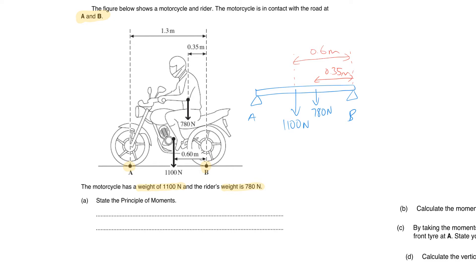So that's our question translated — two forces currently acting downwards, but there are another two that we need to draw on. That is one force acting upwards at point A, the normal contact force — let's call this force at A — and there's another force acting upwards, the normal contact force from the ground acting on the tire at B. So there are two forces going up and two forces going down — that's the full picture.